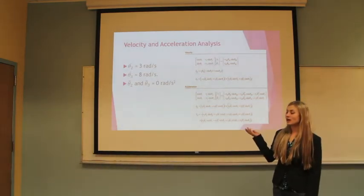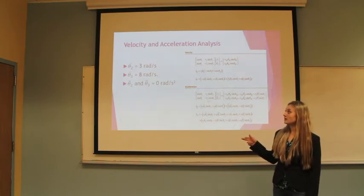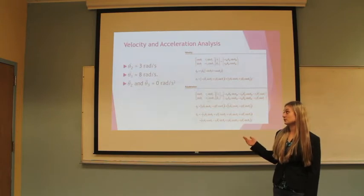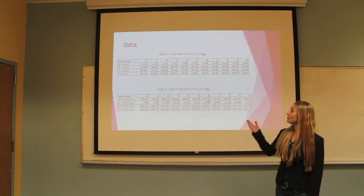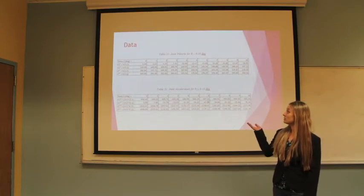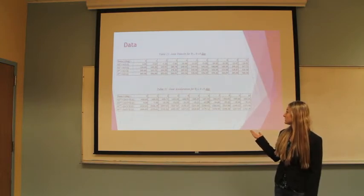The velocity acceleration analysis was found by using the velocity and acceleration equations and plugging in the values previously found for theta2 dot, theta3 dot, and theta2 double dot. Here are some data points for the joint velocity for theta2 from 0 to 10 degrees and also the joint acceleration for theta2 from 0 to 10 degrees.